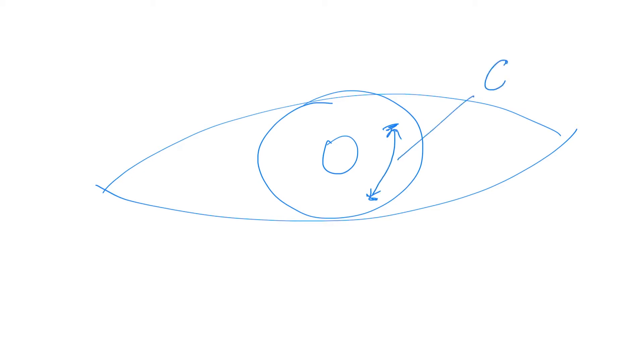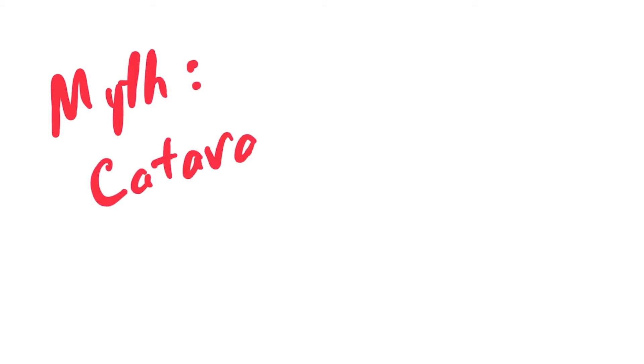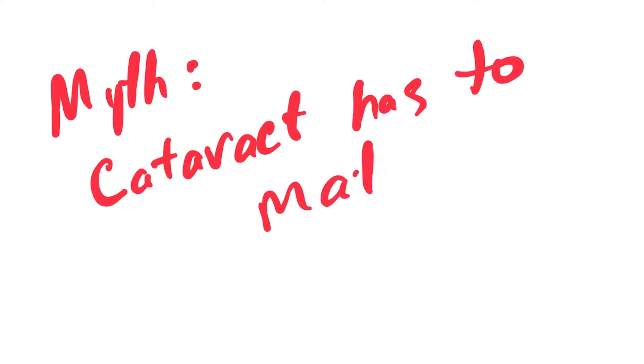The modern procedure is absolutely different. The old method is the source of popular myths about cataract — that it has to be matured before removal. That is absolutely not the case today. If you have a cataract and are unhappy with the quality of your vision, you can have surgery at any time to restore your clear vision.